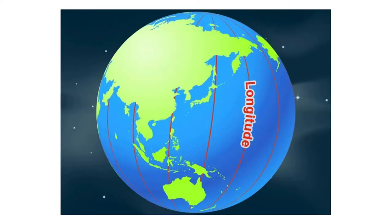Longitude measures the east-west position. All of the vertical red lines are longitude.